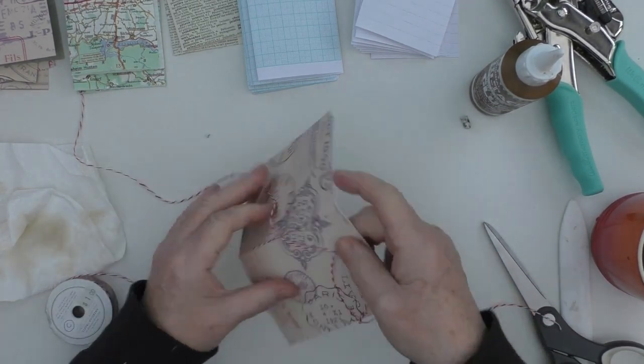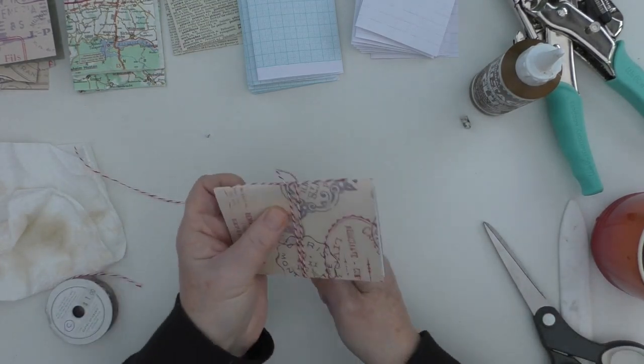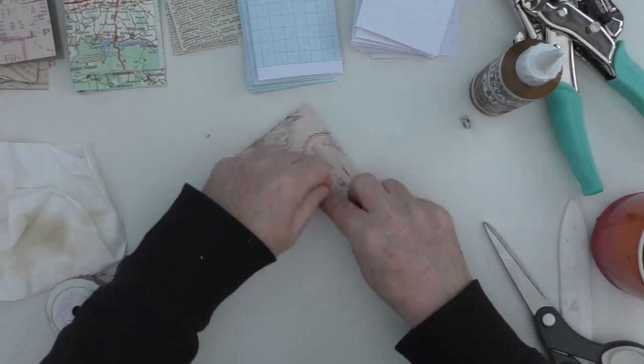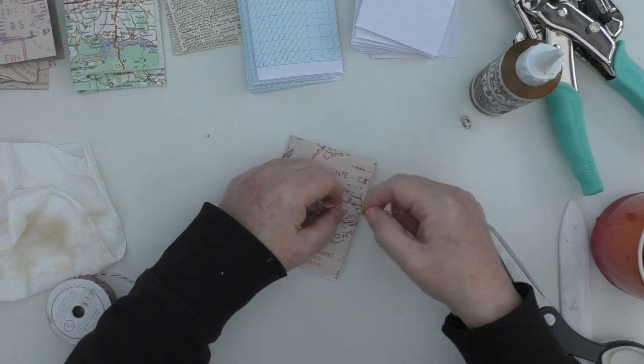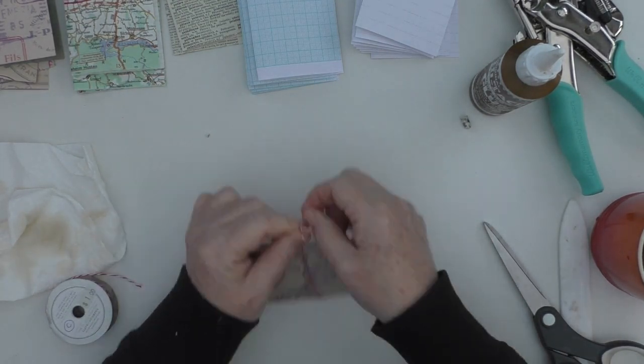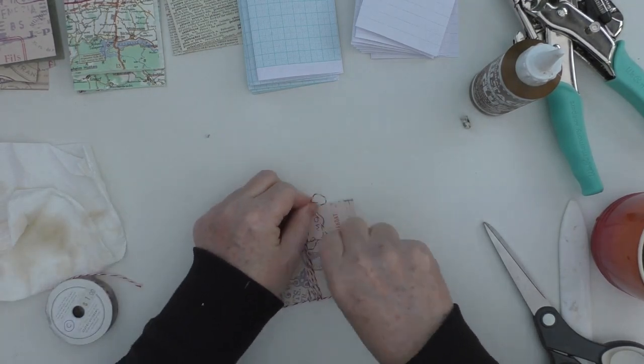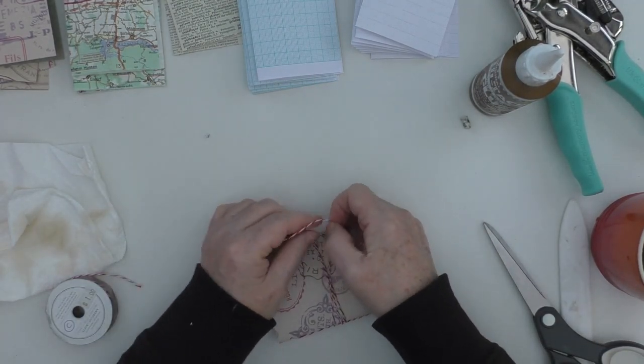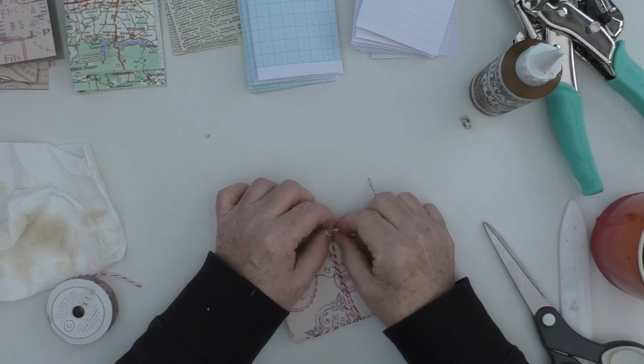And I just pull that. You want it fairly tight and then it will simply wrap around. Always takes me a minute or two to tie a bow. I don't know why. I always find it fiddly, but there we go. And that is basically how that journal is made.